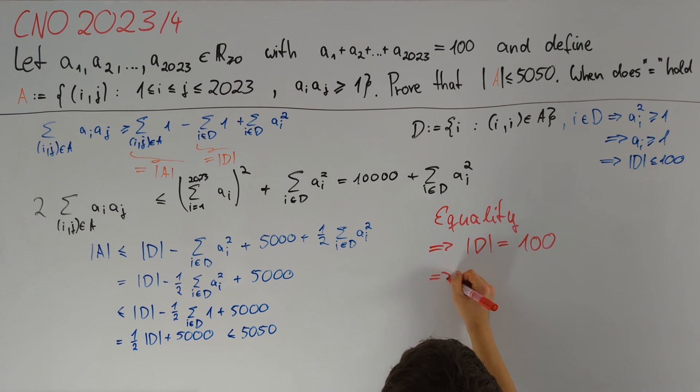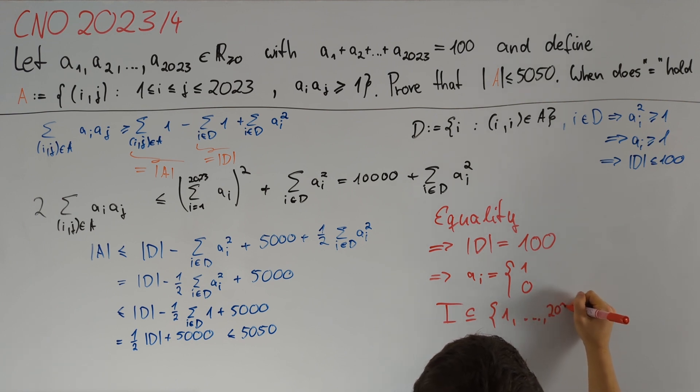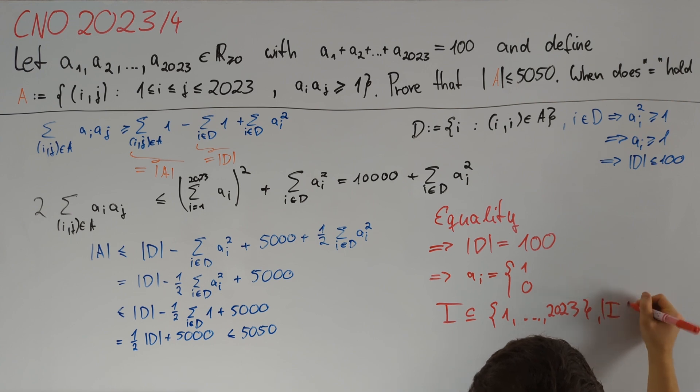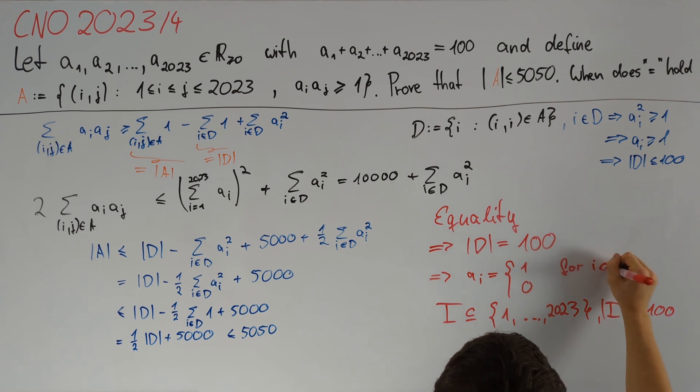So we have that a_i is either equal to 1 or 0, and in order to decide this we just take some index subset I of 1 up to 2023 of size 100, and then say that a_i is equal to 1 for i in I and 0 otherwise.